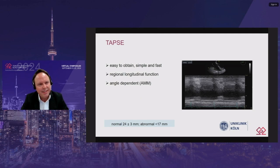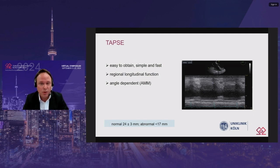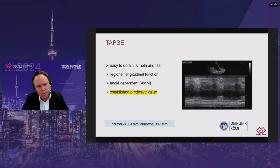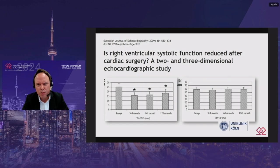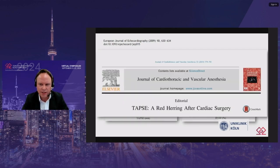TAPSE is perhaps the most often used parameter: easy to obtain, fast, and a regional longitudinal function assessment tool. However, it is angle dependent, so for transesophageal echocardiographic assessment you need the anatomic M-mode or an alternative view. TAPSE is an established predictive parameter, but it may not be adequate after cardiac surgery. The data is more than 15 years old — after cardiac surgery there's a reduction of TAPSE, but 3D right ventricle ejection fraction is often preserved. Therefore, TAPSE has already been labeled as a red herring after cardiac surgery, though this is debatable.